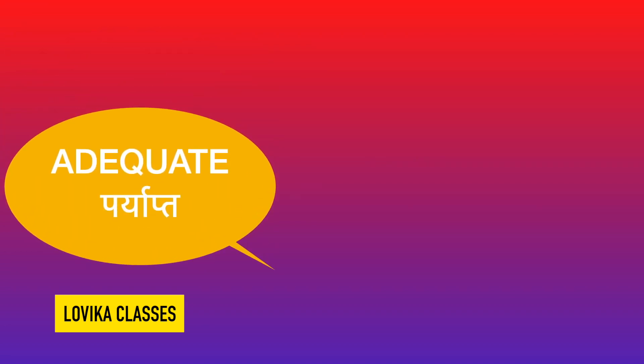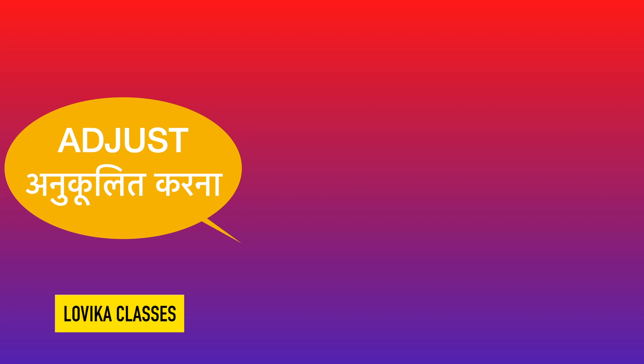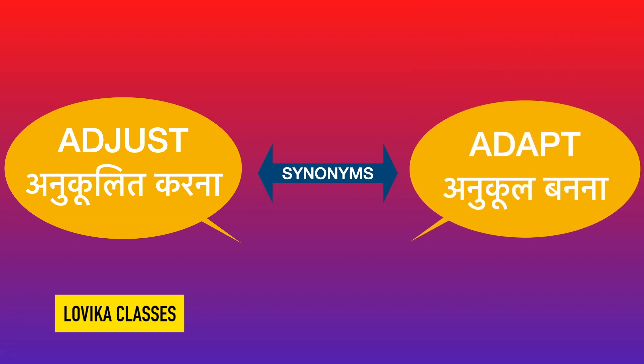Next is adequate, means paryapt. Its synonym is enough — enough means prayapt. Next is adjust, means anukool. Another word is adapt, also means anukool. Adjust and adapt are the same thing because they are synonyms — it means more than one word with the same meaning.